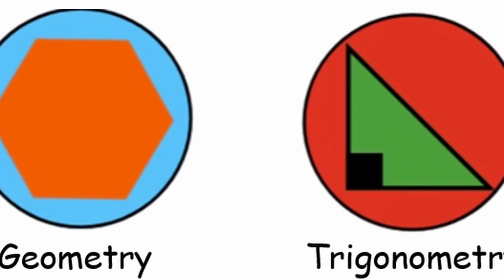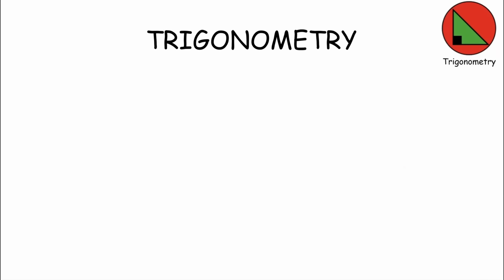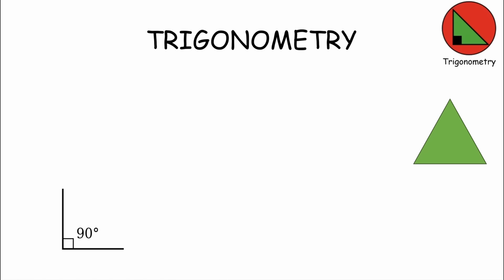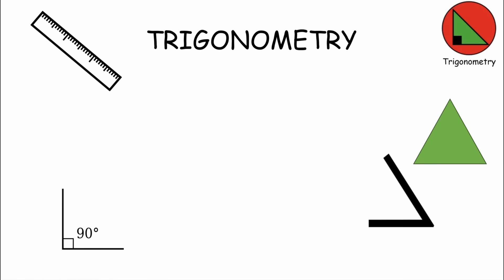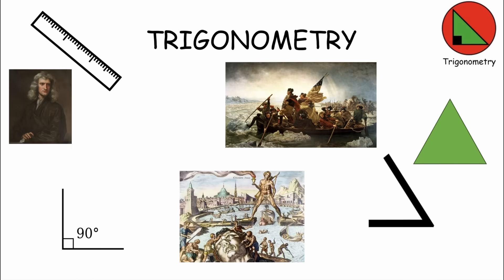Trigonometry is a branch of math that focuses on the relationships between the angles and sides of triangles. It helps us understand and calculate things like distances, heights, and angles in various situations, such as navigation, architecture, and physics.